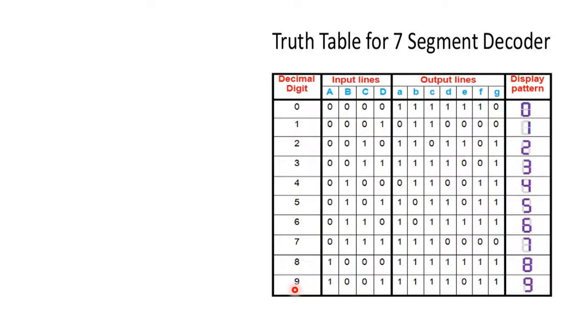When displaying decimal digit 9, you can see all segments are on or activated except one, that is E, meaning this particular segment is off. So depending upon which pattern we want to display, either of the segments is going to be on or off.